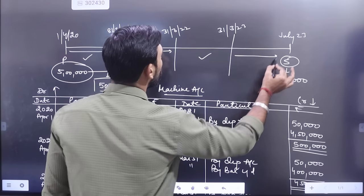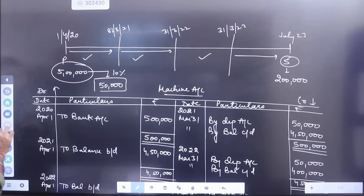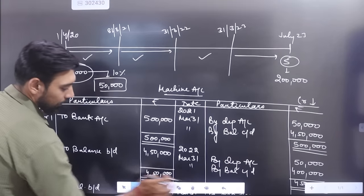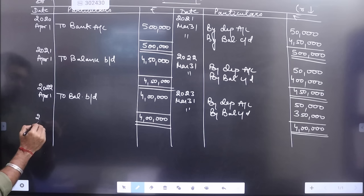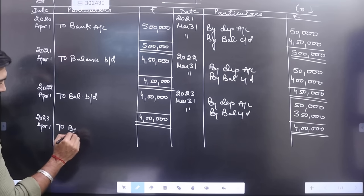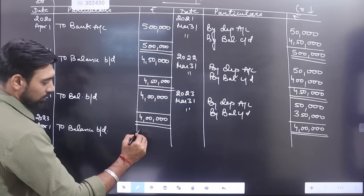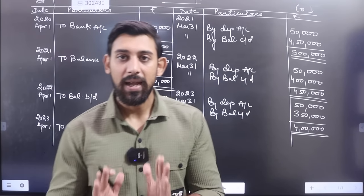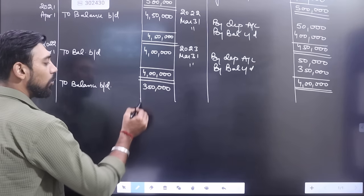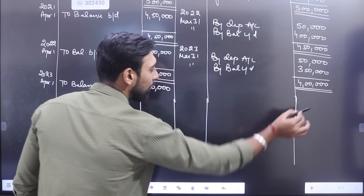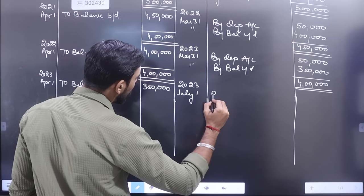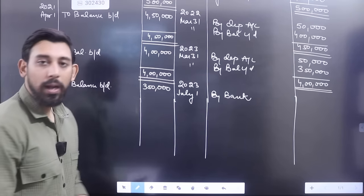Phir se aage chalenge - July 23 mein humne isko bech diya. Ab yeh dekhna hai - on 1st July 23 the machine was sold. Toh sabse pehle balance le aao - 2023 April 1 balance brought down 3,50,000. Sahi hoga. Ab July 1st mein aapne machine ko sale off kar diya. Machine bikegi toh credit side mein bikegi kyunki asset credit mein kam hota hai. 2023 July 1st - yahan pe likhna: by bank - jitne ki biki - 2,00,000 rupees.